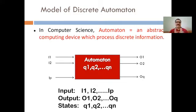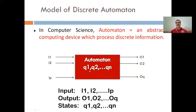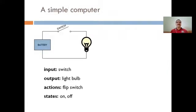In the diagram, i1, i2, up to ip are the set of inputs, and o1, o2, o3 are the set of outputs. The new concept here is the state — q1, q2, up to qn are the states. To explain these states, outputs, and inputs using a real example, consider the simple example of a light bulb. The objective is to light the bulb, so the input can be considered as a switch and the output is the light.